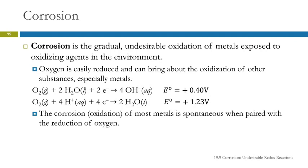What's causing the metals to oxidize? It's oxygen. Oxygen is great because we need it to live, but it also does a number on metals. Oxygen is easily reduced, and so that can bring about the oxidation of other substances. When you look at the list of electrode potentials — the reduction potentials — you see that oxygen is above most of the metals in that list, which tells us that oxygen will oxidize most of the metals.